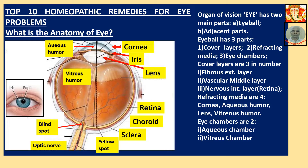Before going into the description of the remedies, let us first know the various terms because these terms will be used while describing the medicines. What is the anatomy of the eye? The organ of vision has two main parts: eyeball and adjacent parts. The eyeball has three parts: covering layer, refracting media, and eye chambers.